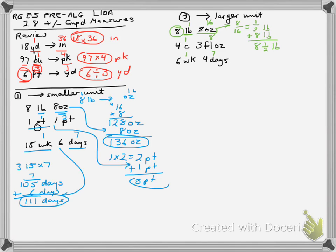Now let's look at a couple more examples. Let's say we're moving to the larger unit, which is cups. We have 3 fluid ounces and there are 8 ounces in a cup, so I take my 3 ounces and divide by 8. I can leave it as a fraction — that's perfectly fine. That gives 3/8 cups, and I add it to the 4 cups I already have, getting 4 and 3/8 cups.